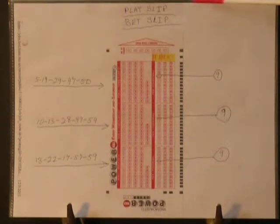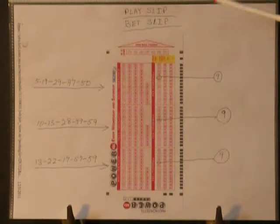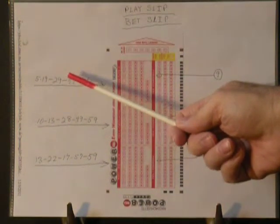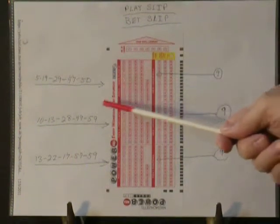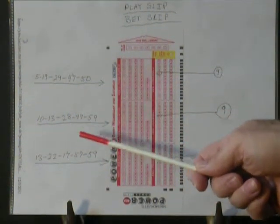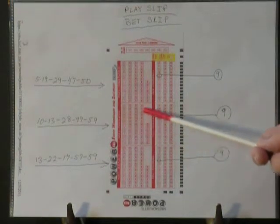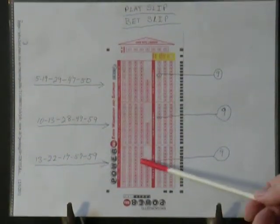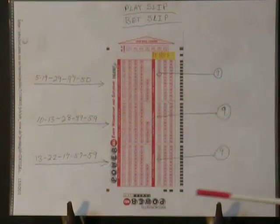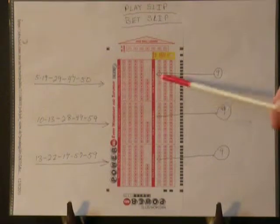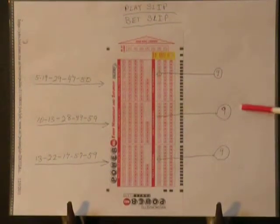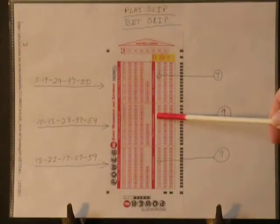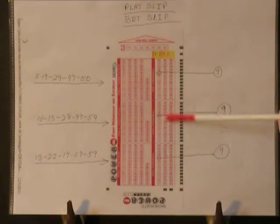Here is our first bet slip. The first number set is 5, 19, 29, 47, 50 — goes in the first section. Second set: 10, 13, 28, 49, 59 — goes in the second section. Third set: 13, 22, 17, 57, 59 — goes in the third section. Now in our bonus section, all three plays will have the same bonus number: 9. So we put 9 in the first, 9 in the second, and 9 in the third.